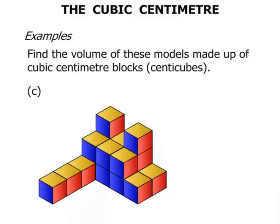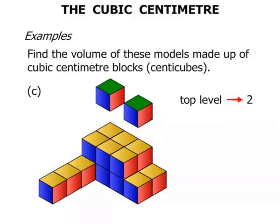Now what about this one? It has got three layers. Each layer is quite different. One, two on the top layer. So we will actually write top level. We have got two so far. I am just going to move them up there so we can have a clear look at the rest.